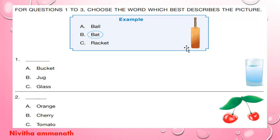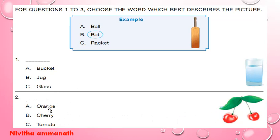Here the picture shows a bat, so B is the correct option for question 1. This is a glass with water, so 1C is the correct option. The options are orange, cherry, tomato — these are cherries, so B is the correct option.